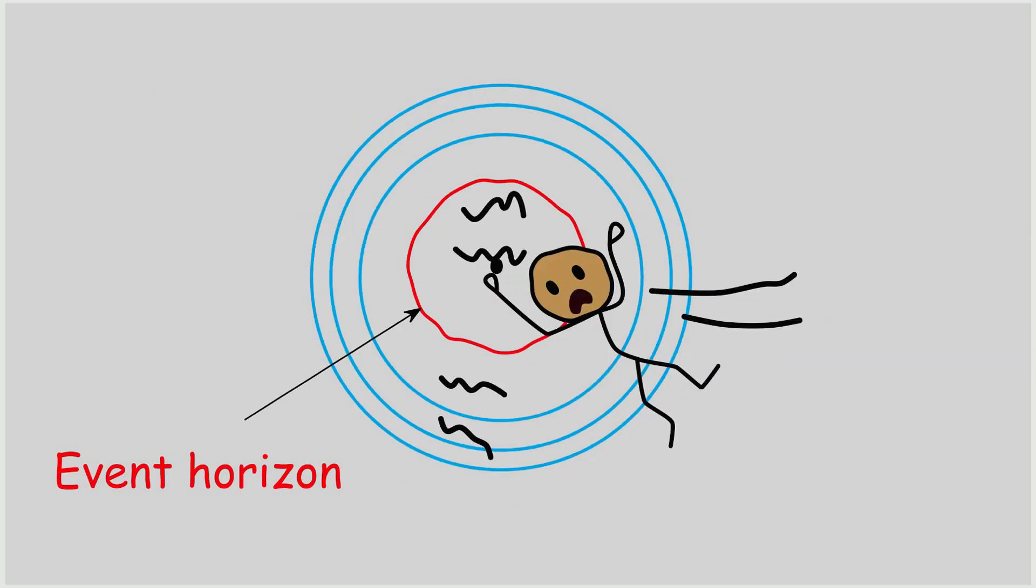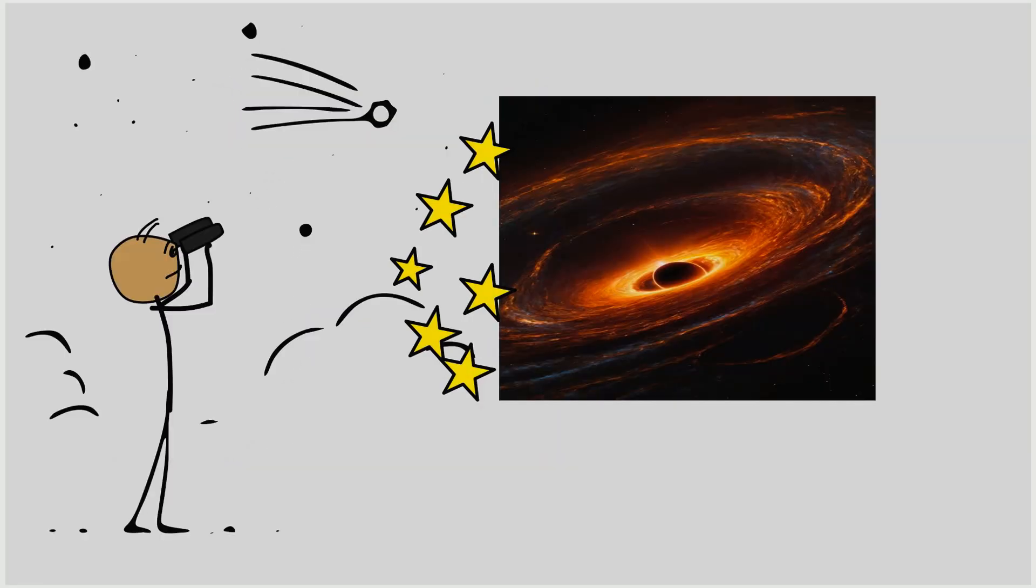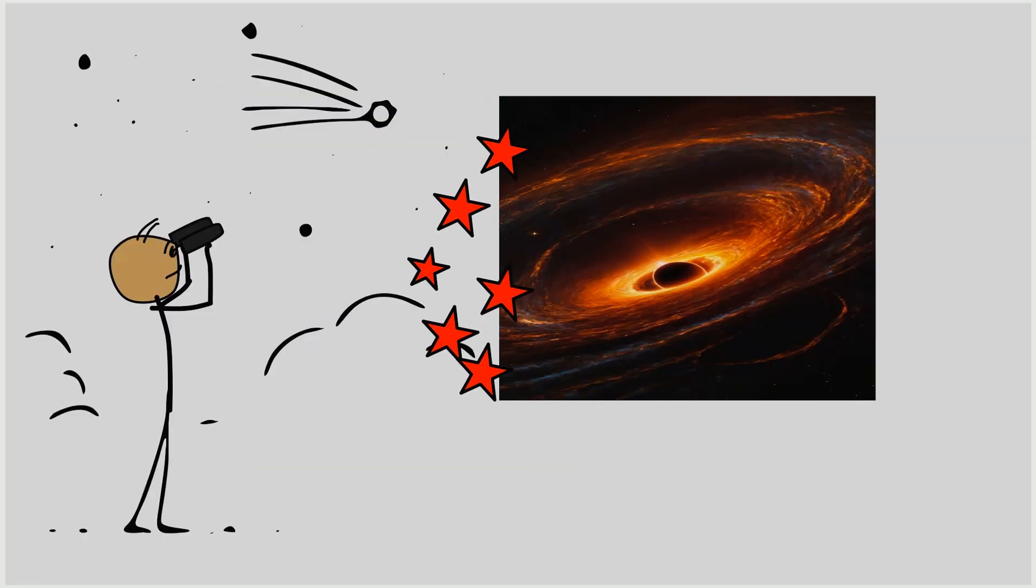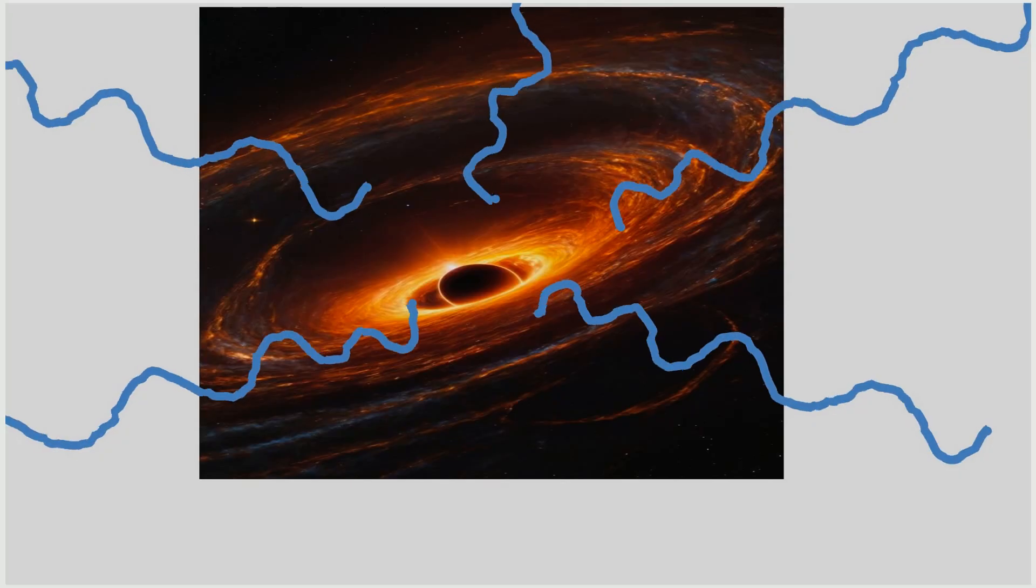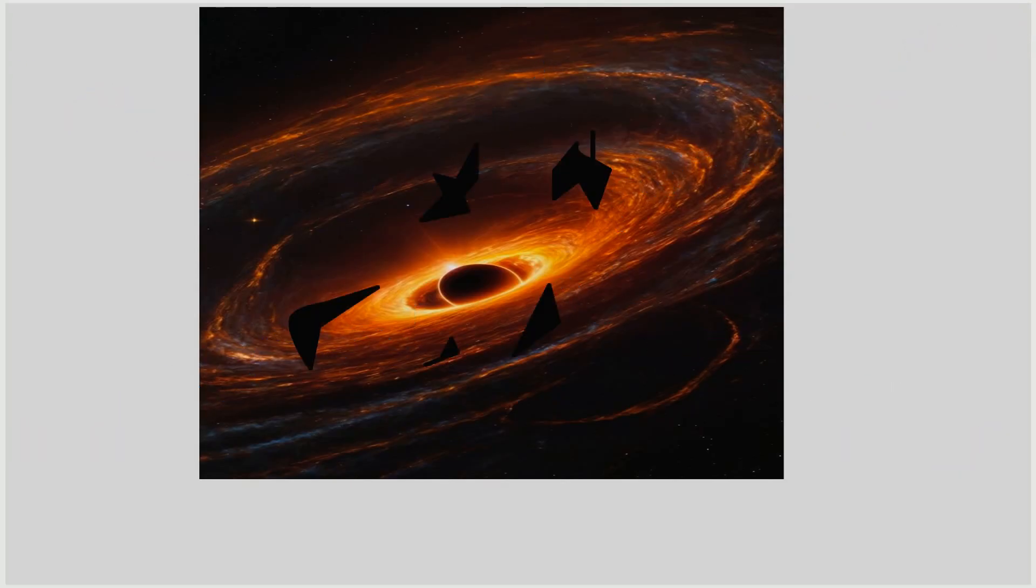The event horizon marks the end of predictability. Anything beyond it cannot communicate with the outside universe, and observers can only see matter just before it crosses this boundary, frozen in time and increasingly redshifted. Tidal gravitational forces near the event horizon can tear apart stars, planets, or spacecraft.